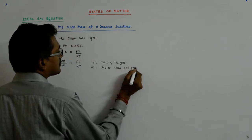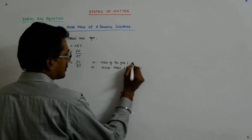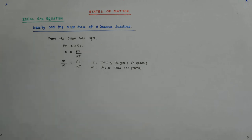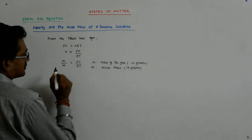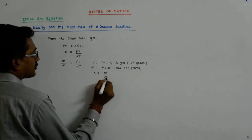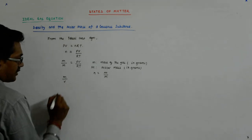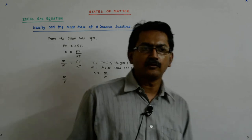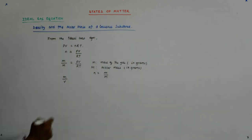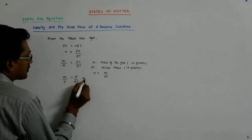And molar mass you have to have in grams, then this works. And n is equal to m upon M, this we know. Now m upon V, it is mass upon volume. We wanted to relate the density with the molar mass. So m upon V is equal to P upon RT into M.